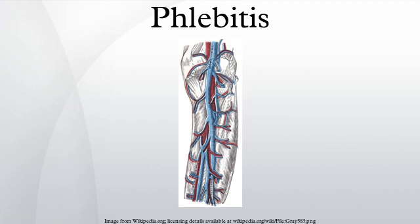Thrombophlebitis is typically caused by local trauma to a vein, usually from the insertion of an intravenous catheter. However, thrombophlebitis can also occur due to a complication of connective tissue disorders such as lupus, or of pancreatic, breast, or ovarian cancers.